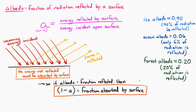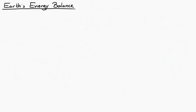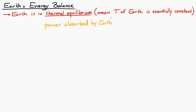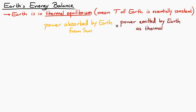That'll be useful in a moment. Now let's look specifically at Earth's energy balance. We'll start out by saying that the Earth is in thermal equilibrium, or at least very close to it. The Earth's temperature is not drastically changing very quickly. So if it's in thermal equilibrium, the power being absorbed by the Earth — the power coming in from the Sun — has to equal the power emitted by the Earth through thermal radiation.